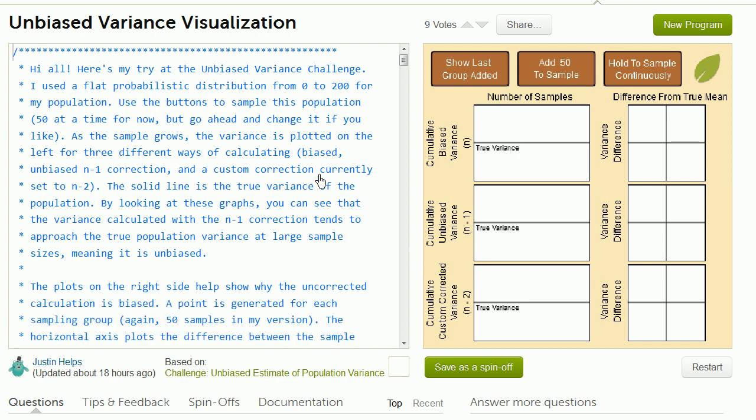So what he does here is a simulation with a population that has a uniform distribution. He says, I used a flat probabilistic distribution from 0 to 100 for my population. Then we start sampling from that population, using samples of size 50.